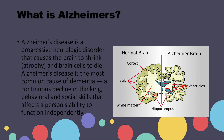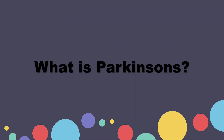What is Alzheimer's? Alzheimer's disease is a progressive neurologic disorder that causes the brain to shrink and brain cells to die. It is the most common cause of dementia — a continuous decline in thinking, behavioral, and social skills that affects a person's ability to function independently.